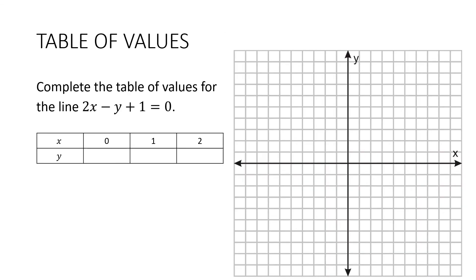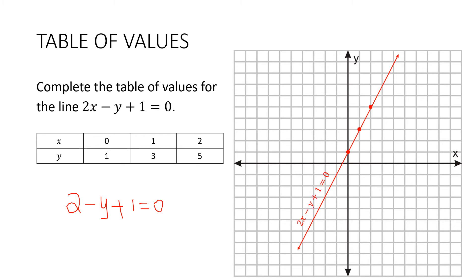Let's briefly review how to complete a table of values to graph a line. Complete the table of values for the line 2x take away y plus 1 equals 0. So we're going to substitute the 0 in — y is going to be equal to 1. This is written in general form, so we substitute the 1 in and solve the equation: 2 take away y plus 1 is equal to 0, giving y is equal to 3. Similarly, substituting the 2 in, y is equal to 5. So we plot those points, draw up the line — make sure you have arrows on both ends — and then label the line.